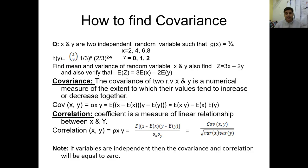One thing you need to remember: if variables are not independent, then the covariance and correlation will be equal to 0. In the previous example which I have already discussed, those two random variables are independent. I am going to show you in a specific example that if two random variables are independent, then their covariance and correlation will be equal to 0.